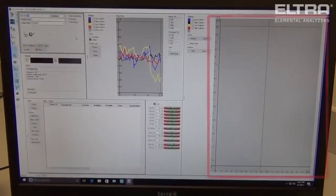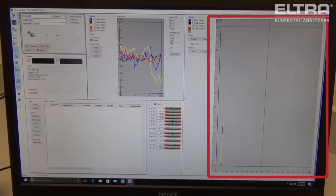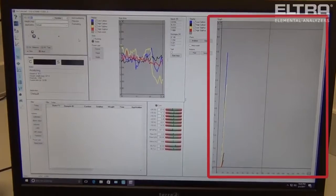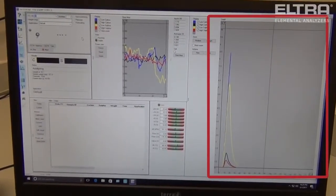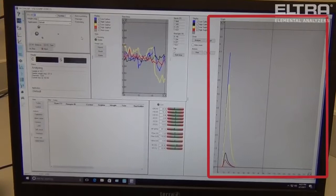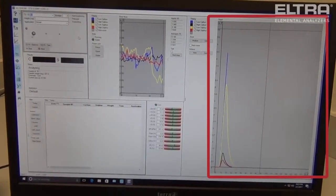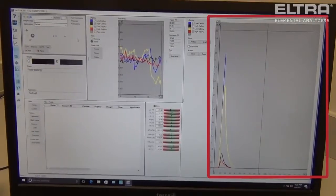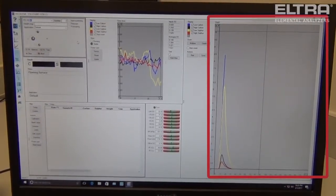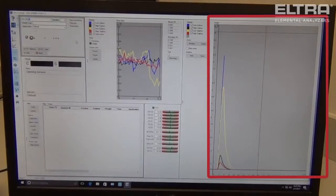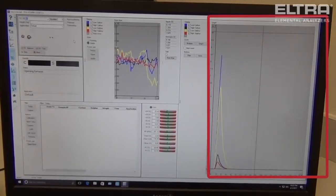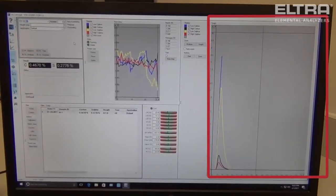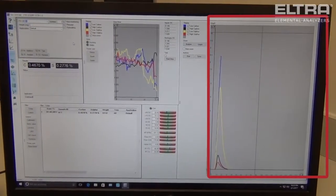On the graph to the right, you can see in real time the results of your analysis. As you can see, each peak is represented by a different color. Each color represents the certain IR channel to which the sample is being introduced. The blue line you see tops out at a maximum of 8.5 volts, which we have set up in the system. The system automatically knows to send that sample to the high carbon channel, which is represented by the black peak.